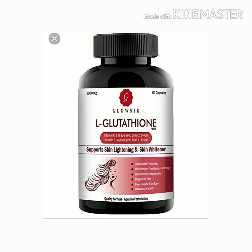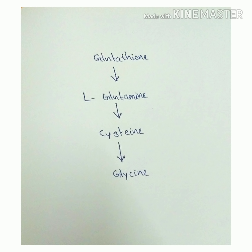Glutathione is an enzyme. It is made up of three amino acids: L-Glutamine, Cysteine, and Glycine. These are called amino acids — they are the building blocks of protein in the body. These three amino acids together form this powerful antioxidant.